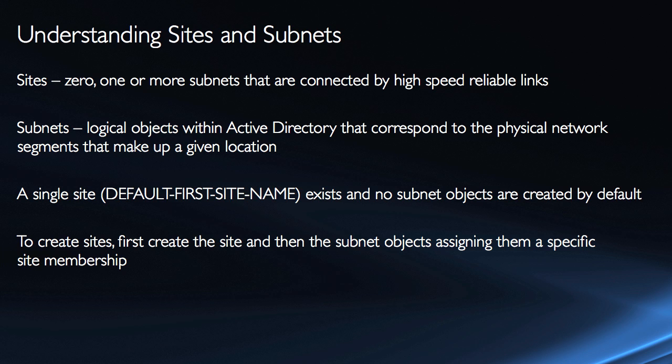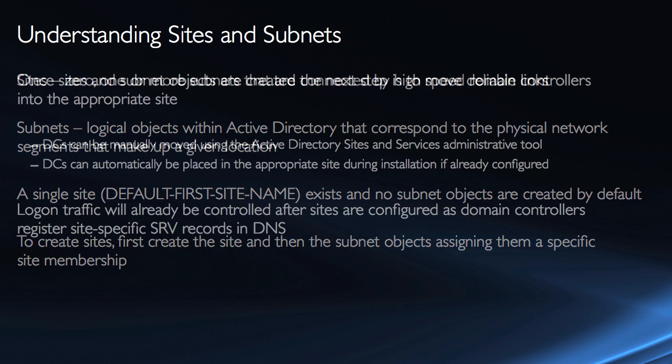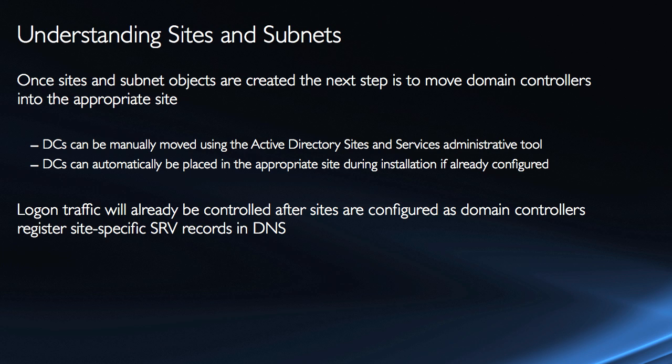Once we've created them, we have to make sure that the domain controllers are in the appropriate place. If sites already exist when you go to install Active Directory on a domain controller, you will be asked which site to place that domain controller in. However, if you already installed before creating sites, you would just need to move them manually using Active Directory Sites and Services, or during installation they can be automatically placed. Logon traffic will already be controlled once the domain controllers are in the appropriate site and dynamic update has happened — reboot those machines or restart the NetLogon service — and they will register service records in DNS for their specific site, so client logon requests will be directed to a domain controller in that physical location.